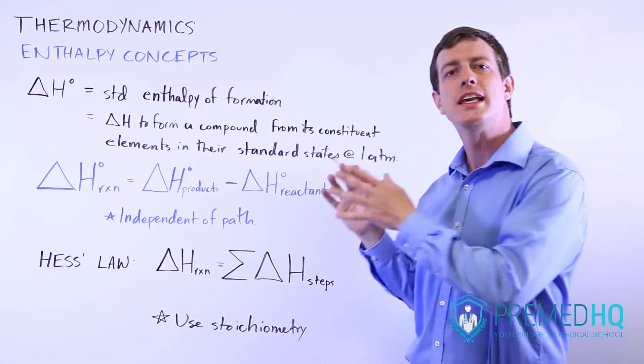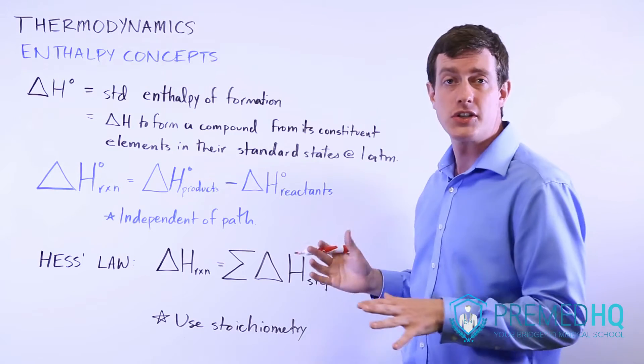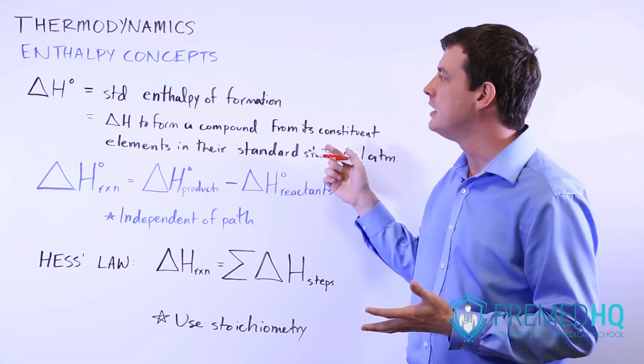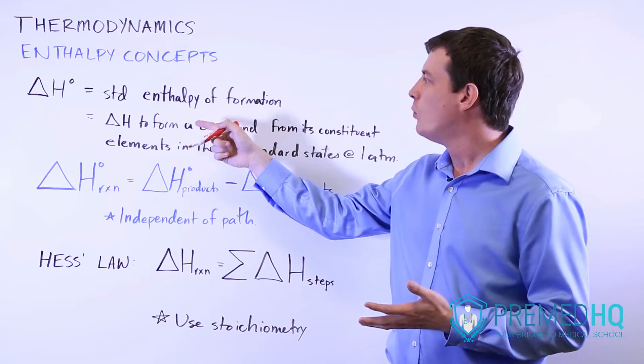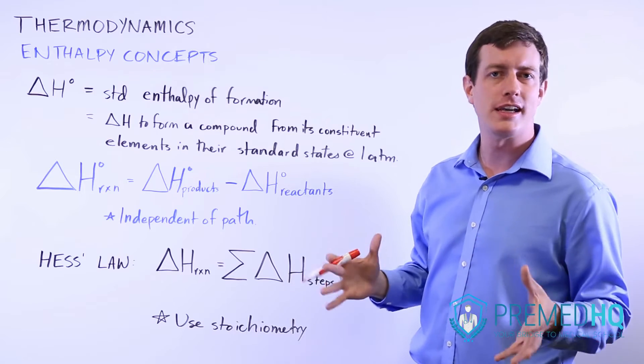So for example, H2 tends to be a gas at one atmosphere and in normal conditions, and so its standard state would be H2 gas, and that would be the thing that they consider when you're looking at the standard enthalpy of formation of some hydrogen containing compound.